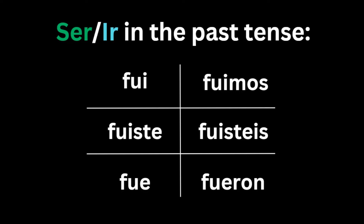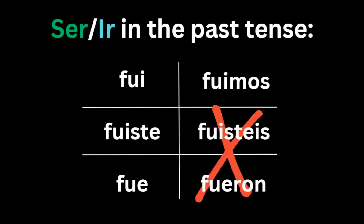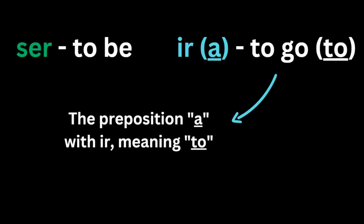I recommend that you focus on all pronouns except vosotros and ellos because all of these conjugations are very useful in Spanish. As I said before, you can only tell the difference between ser and ir in the past simple in context, and there's actually an easy way to distinguish their meaning, and that is through the preposition a, which is used as the preposition to in English.